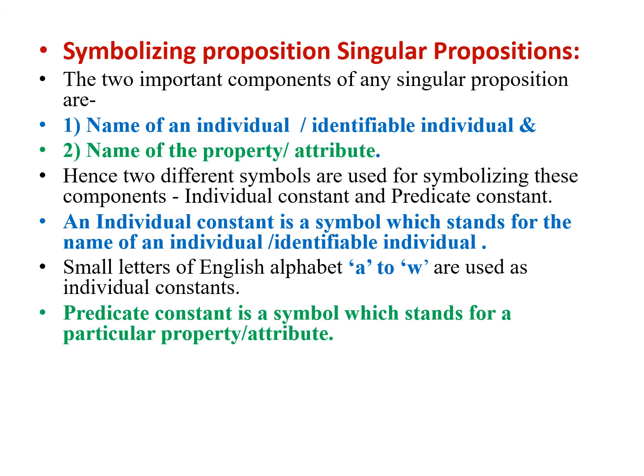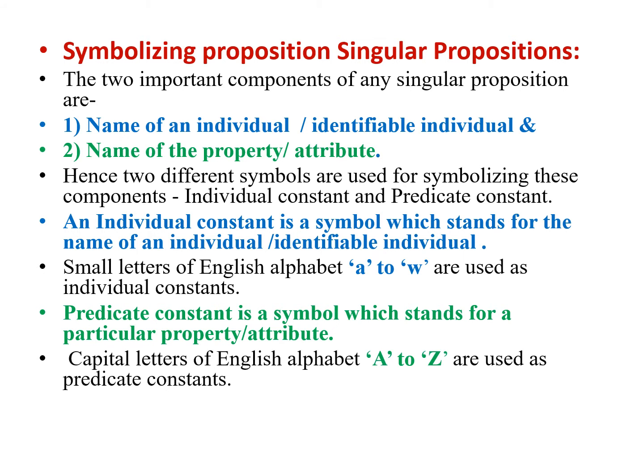Then we have predicate constant. This is a symbol which stands for a particular property or attribute, and capital letters in English alphabet from A through Z are used as predicate constants.